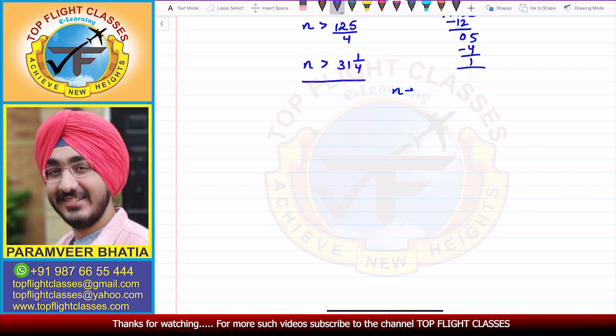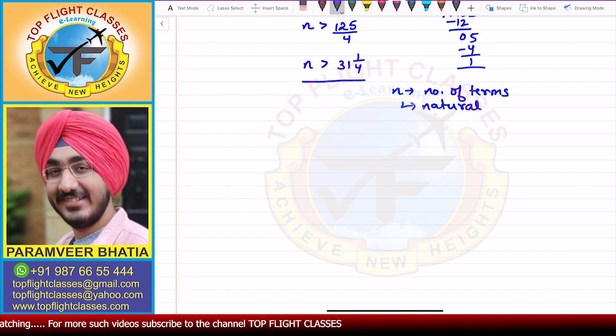So now, N is the number of terms which is a natural number. This we have already discussed. So if N is a natural number and it is the number of terms, and N is greater than 31 by 4...